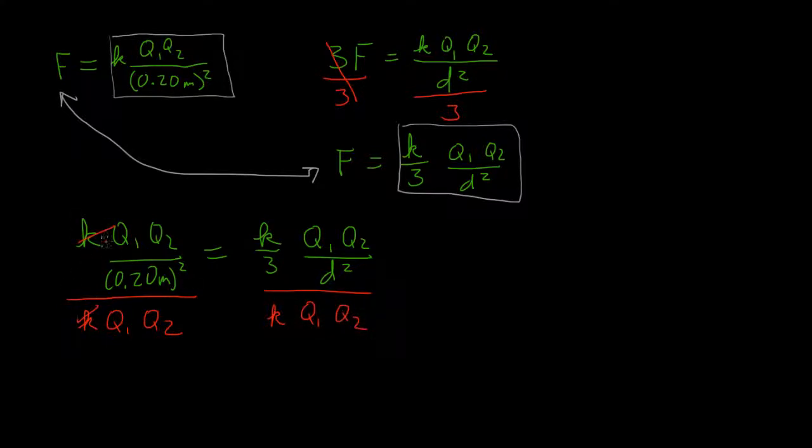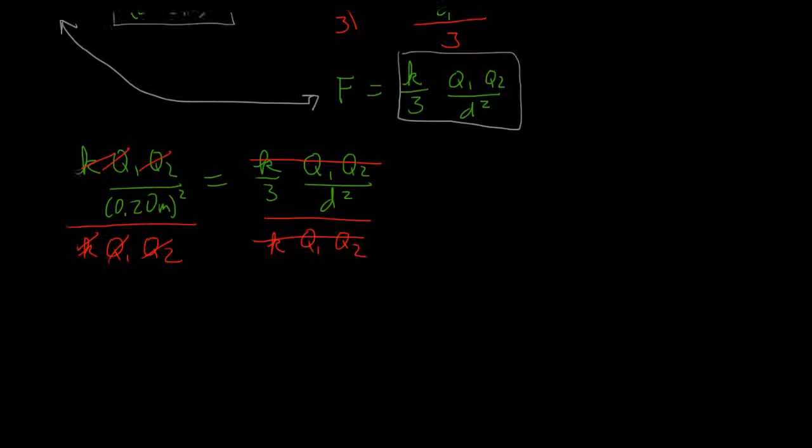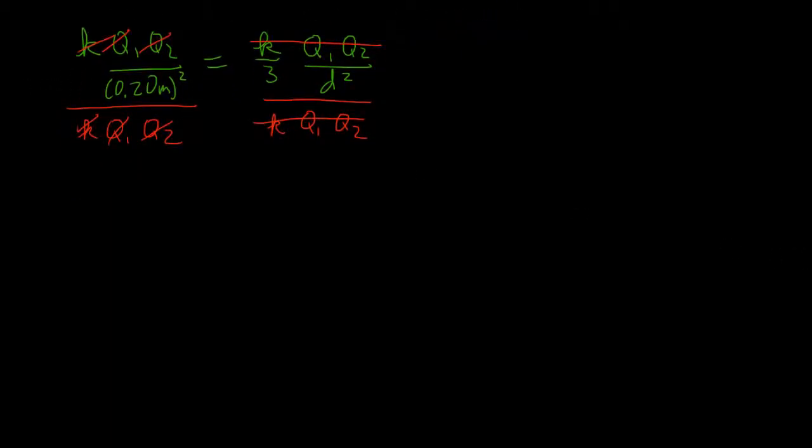So all of this will cancel. And what we are left with is when these cancel we get 1 over 0.20 meters squared is equal to, and same thing, when these cancel I'm left with 1 divided by 3 D squared.